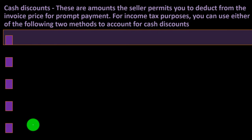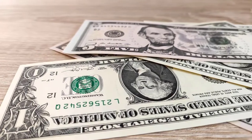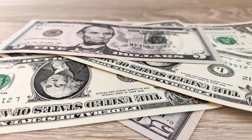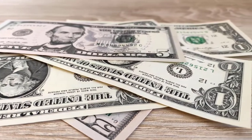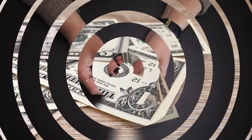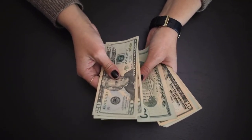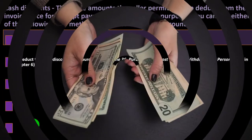Cash discounts are amounts the seller permits you to deduct from the invoice price for prompt payment. For income tax purposes, you can use either of two methods to account for cash discounts. Sellers offer discounts because they want to get paid sooner to increase their cash flow, so if you pay within the shorter time period, you get the lower price.